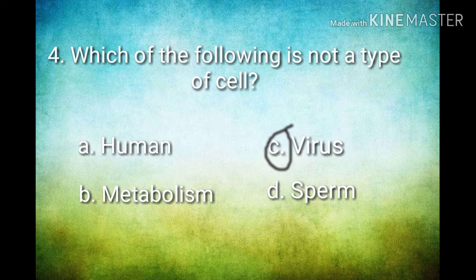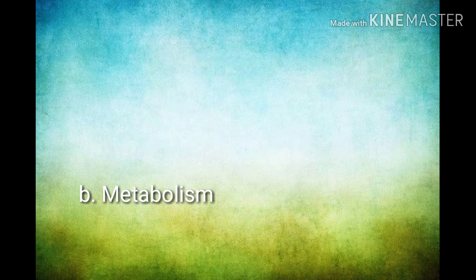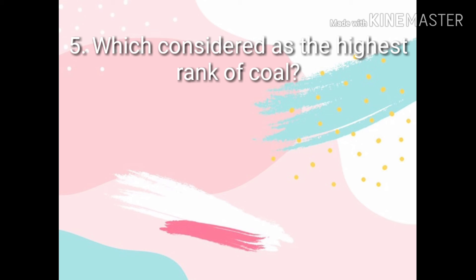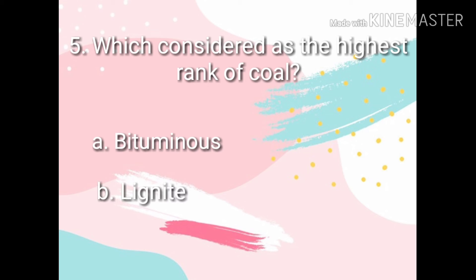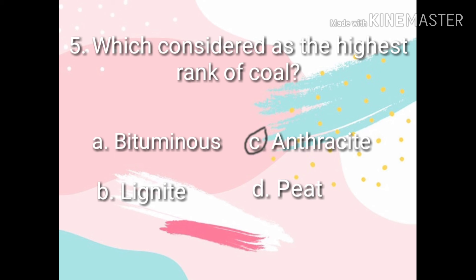The virus is part of pathology, the study of different kinds of diseases. The types of cell include sperm. For number 5: Which is considered the highest rank of coal? A bituminous, B lignite, C anthracite, or D? The correct answer is C, anthracite. Anthracite is the highest rank of coal, second is bituminous, next is peat, and last is lignite.